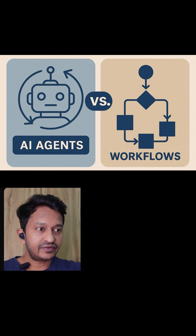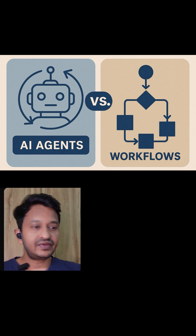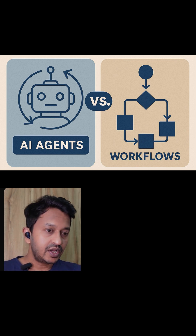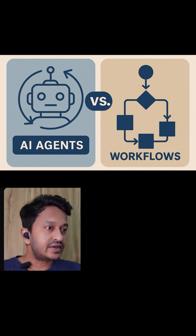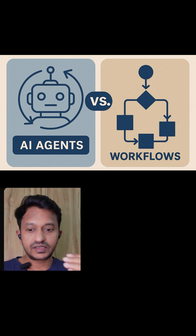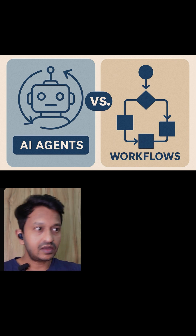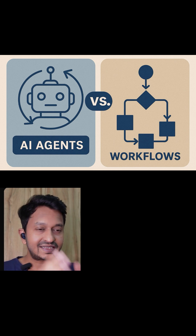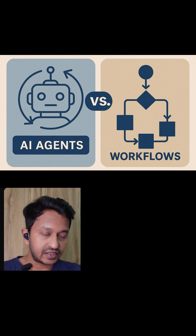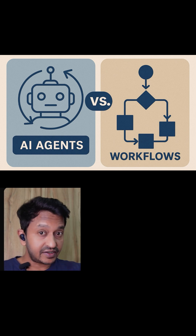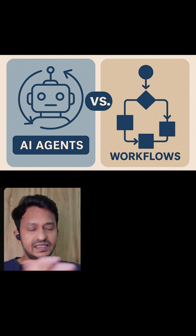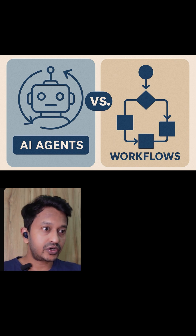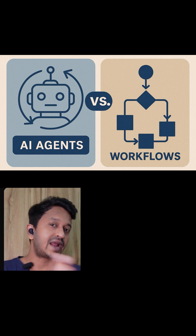Think of it like this — AI workflows are like following a recipe. Everything is step by step, in order. You have clear steps: step one chop the vegetables, step two heat the pan, step three cook for 10 minutes, step four serve. You follow a step-by-step recipe exactly as written, every single time. Everything is predefined, reliable, and you know exactly what you are going to get at the end.